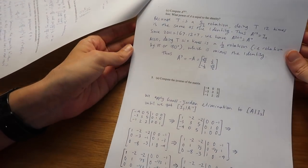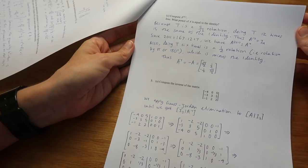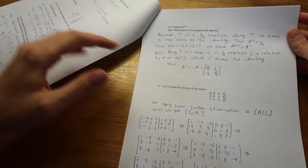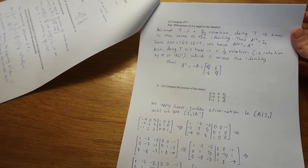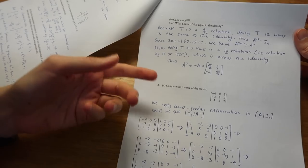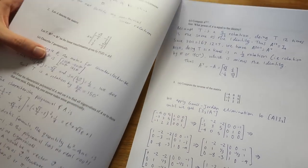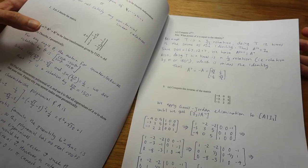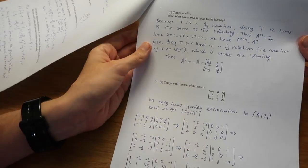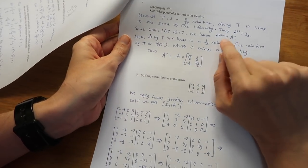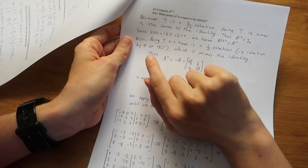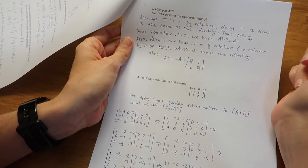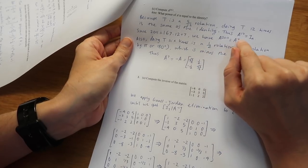Moving on we're asked a question compute A to 2011. Essentially take that matrix of numbers and apply it to something two thousand and eleven times. Now that seems really difficult because that's such a big power but really you need to look at it and figure out that if this matrix is rotating by 150 degrees then if you do it 12 times in a row you're going to end up back where you started back at the identity. So essentially A to the 12 is the identity. Since 2011 is 12 times 167 plus 7, really all you need to do is A to the power of 7.